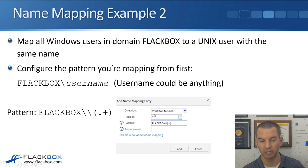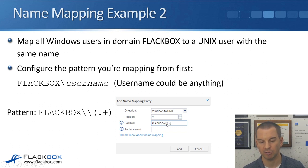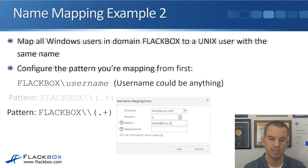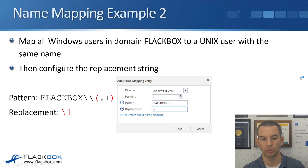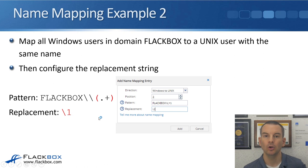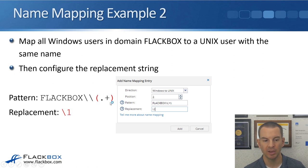In System Manager, the rule is: direction = Windows to Unix, position = 2, pattern = flatbox\\(.+), replacement = \1. If the Windows user was flatbox\Bob, then the replacement will be Bob. If the pattern was flatbox\John, the replacement will be John. This single rule handles all Windows users mapping to the Unix user of the same name.